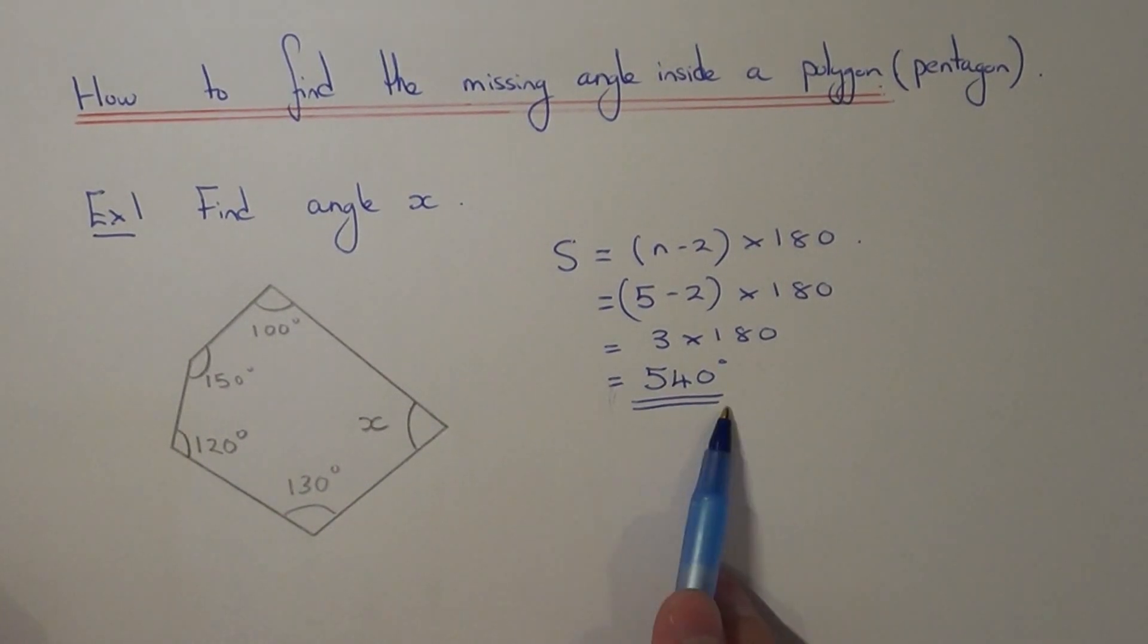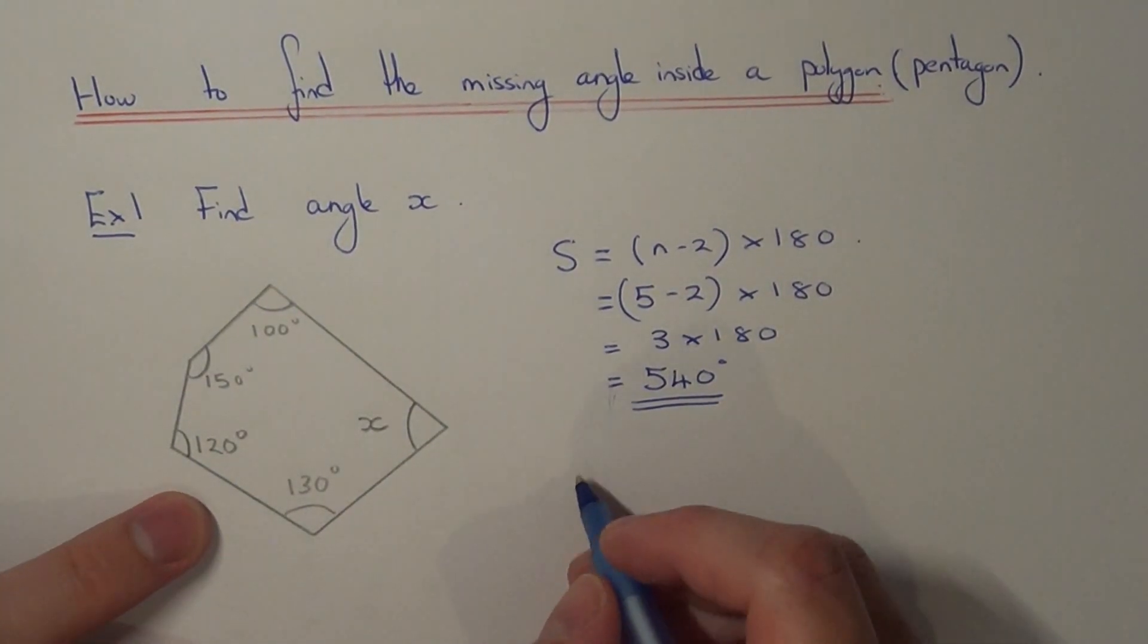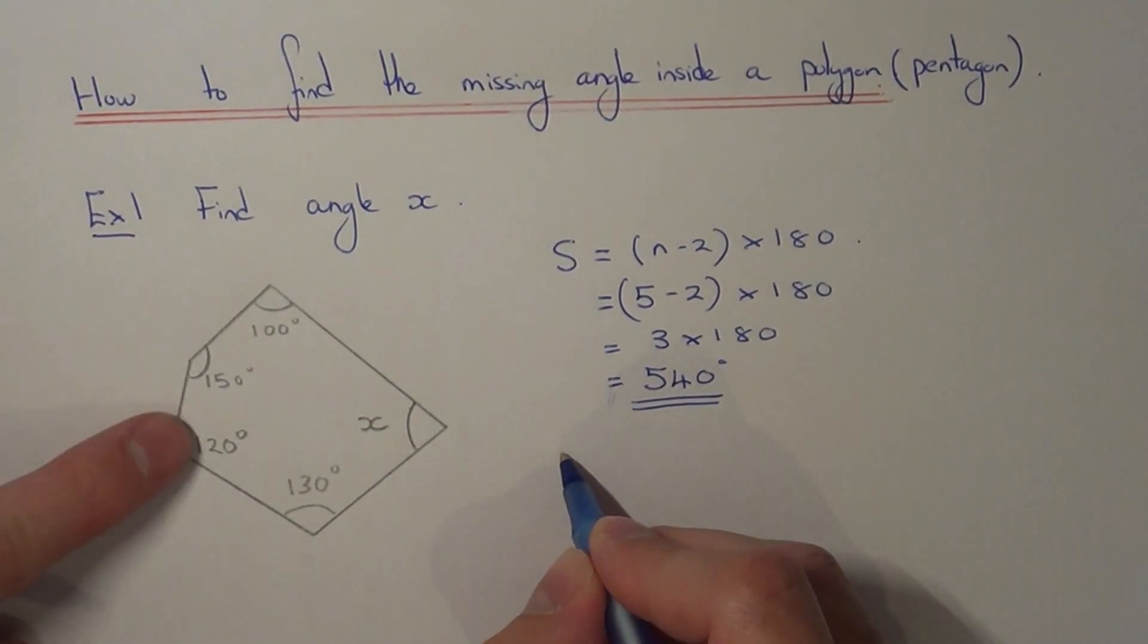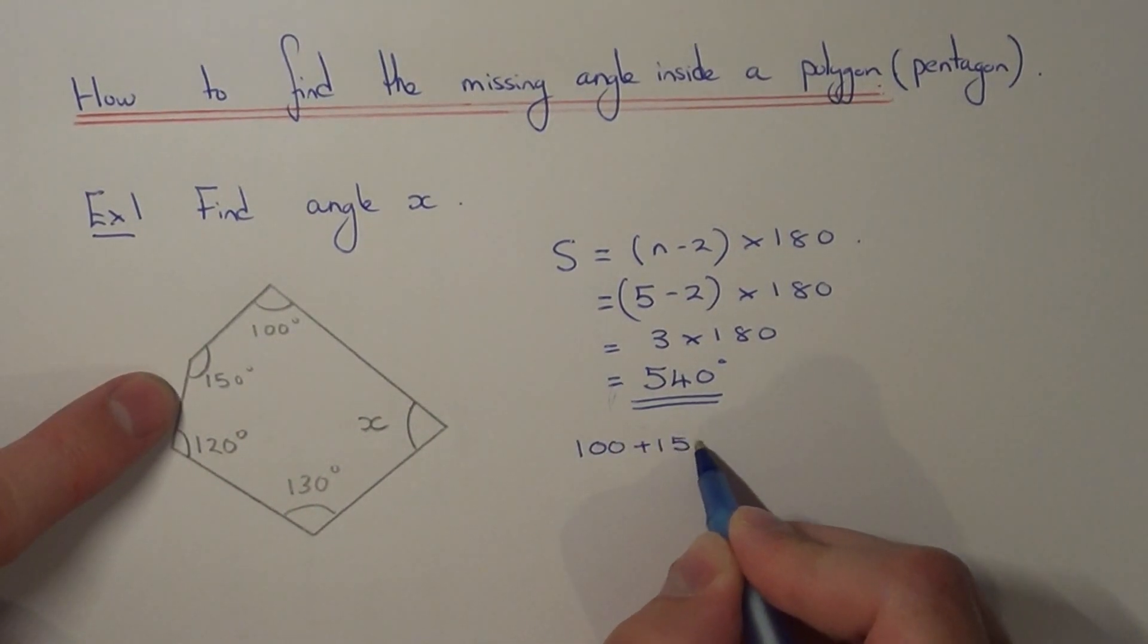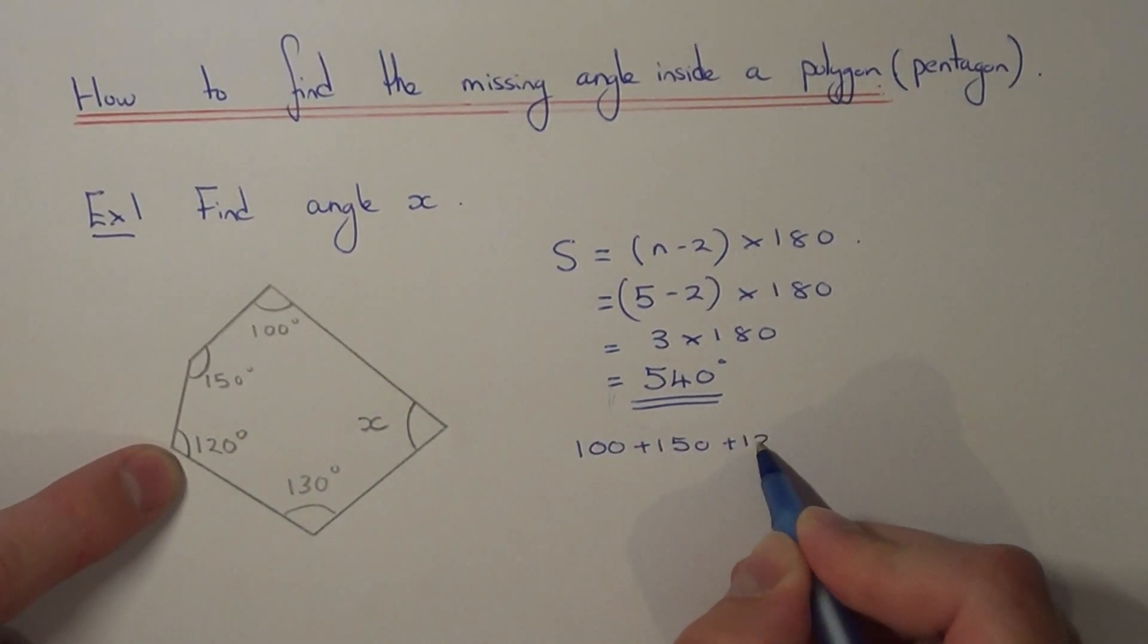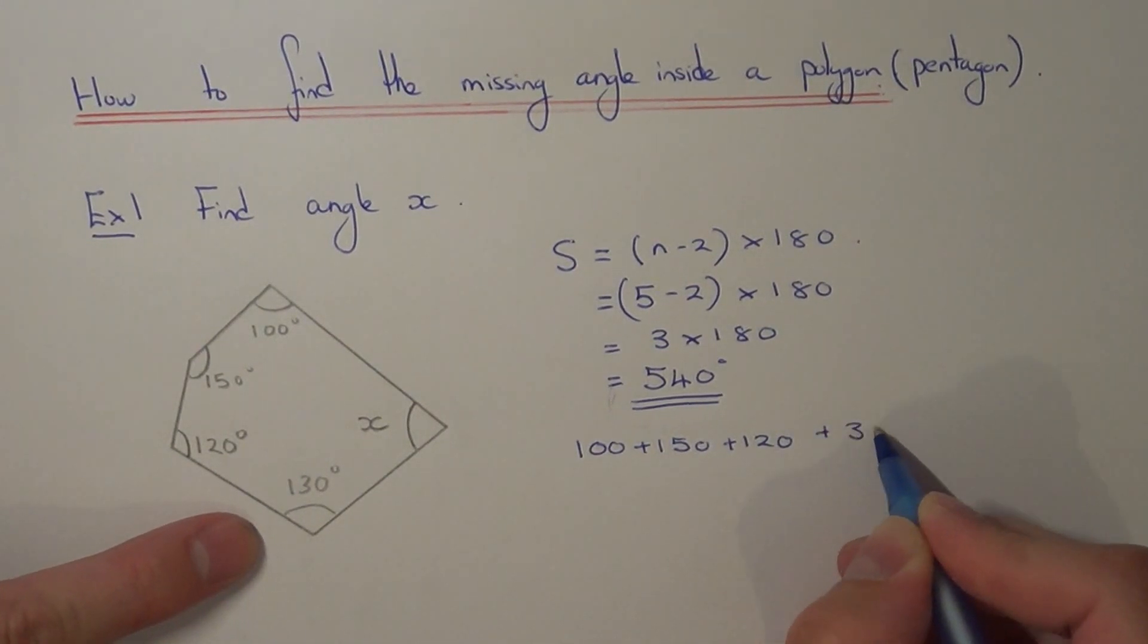So since we know what they all add up to, we just need to add up the four angles that we have now and then subtract this total away from 540. So let's add all these up, so we've got 100 plus 150 plus 120 plus 130.